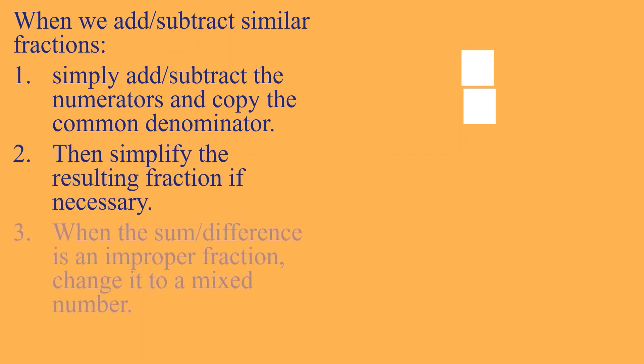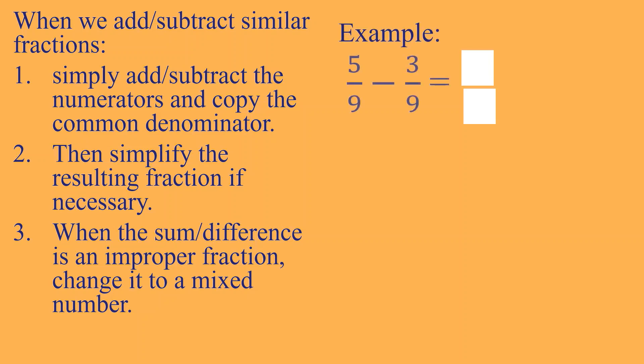Next example. The same rule. The same step sa subtraction naman. We have 5 over 9 minus 3 over 9. So, subtract the numerator. 5 minus 3 is 2. And then, copy the denominator, 9. Do we need to simplify that one? Hindi na. Kasi wala ng common factor ang 2 at saka 9 except 1. So, 2 over 9 is our final answer.